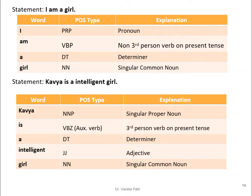For example, the statement 'I am a girl' — 'I' belongs to pronoun (PRP); 'am' belongs to non-third-person verb in present tense (VBP); 'a' is a determiner (DT); 'girl' is a singular common noun (NN). In 'Cabra is an intelligent girl', 'Cabra' is a singular proper noun (NNP); 'is' is VBZ (third-person verb in present tense, also called auxiliary verb); 'an' is a determiner; 'intelligent' is an adjective; and 'girl' is again a singular common noun.